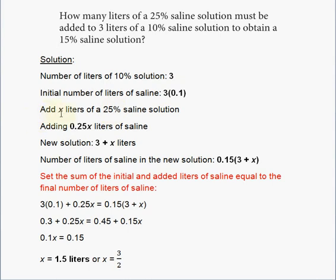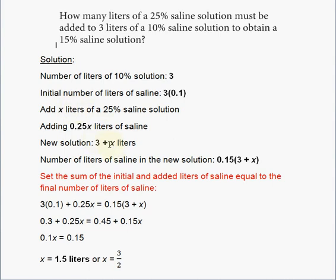Then add x liters of a 25% saline solution — x liters is the mixed solution that has 25% saline by volume. You're going to add 0.25x liters of actual saline, because 25% of x is 0.25x. The new solution will have 3 plus x liters total, because we added x liters of solution to the original three liters.